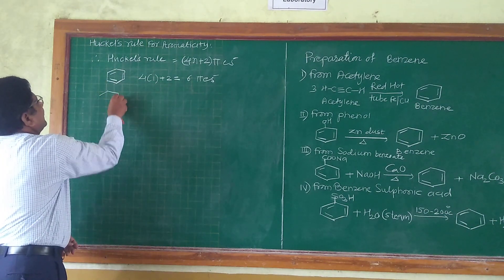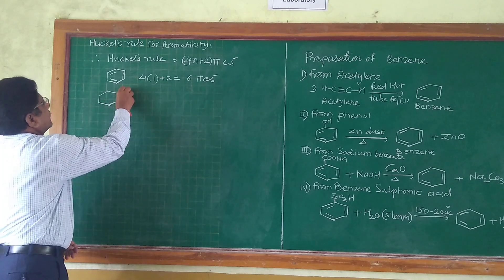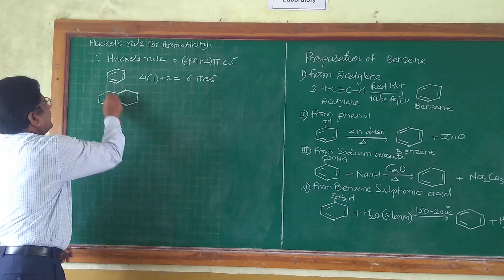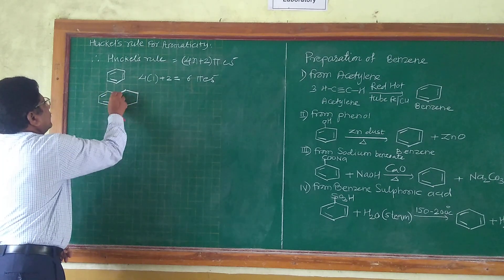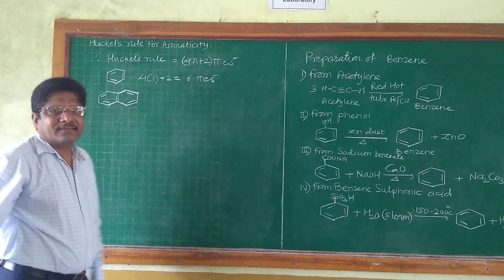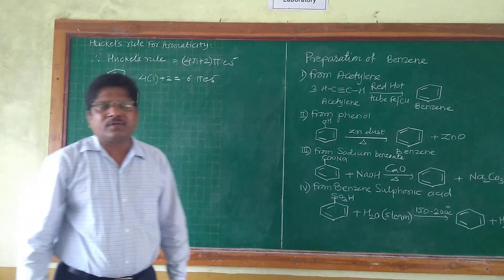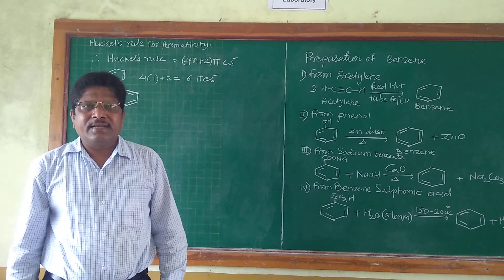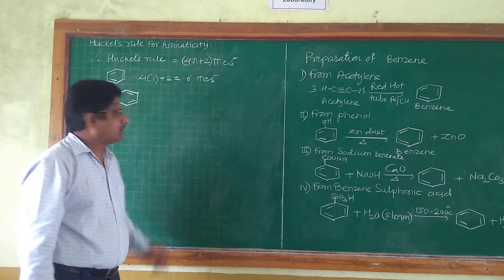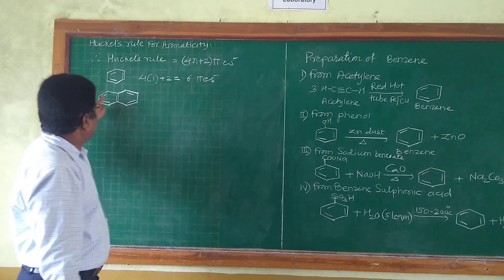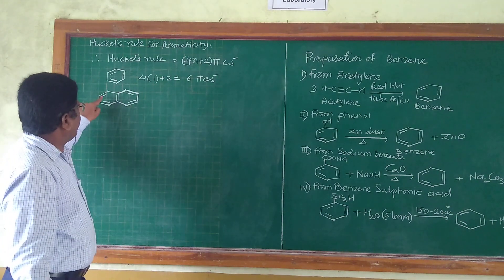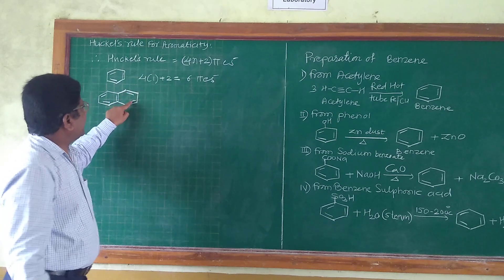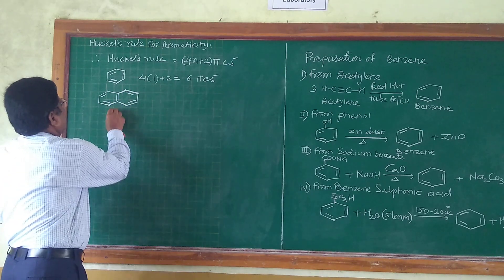Consider the next example — naphthalene. Naphthalene is a bicyclic aromatic compound. If we count the number of pi electrons: 2 + 2 + 2 + 2 + 2 = 10 pi electrons.